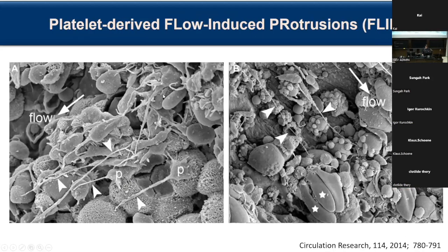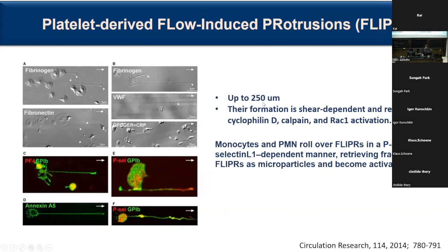There are very interesting long platelet-derived structures referred to as FLIPRs — platelet-derived flow-induced protrusions. As seen in scanning electron microscopic images, their length is up to 250 micrometers, which is remarkable. Their formation is shear-dependent and requires cyclophilin A and Rac1 activation. It has been demonstrated that phagocytic cells like monocytes and polymorphonuclear neutrophilic granulocytes roll over these long processes, take bites, and fragment them as microparticles. Upon uptake of these platelet-derived microparticles, monocytes and neutrophils become activated.